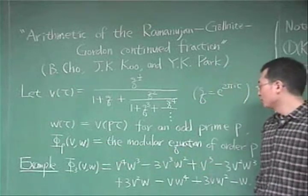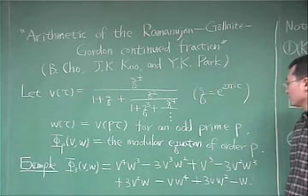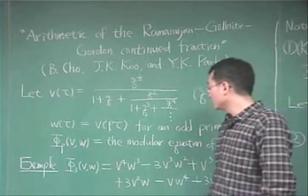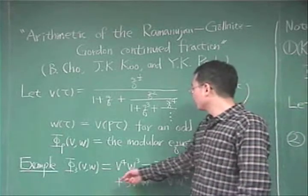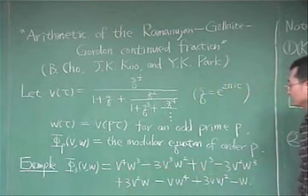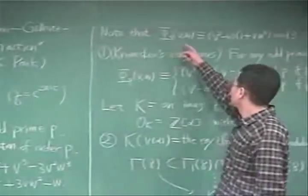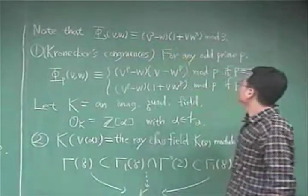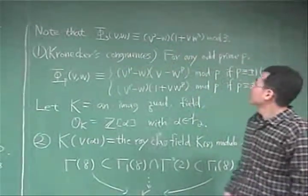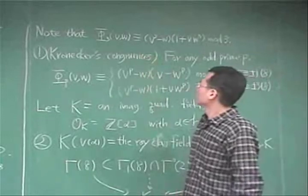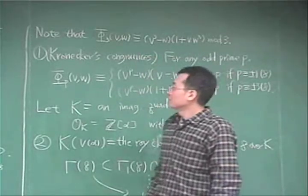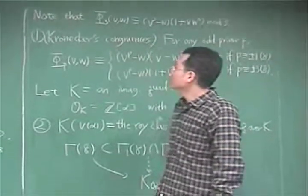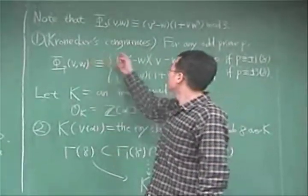Some examples of Modular Equations are given by Chan, Huang, Vaski, and Srivastakuma. For example, when p is equal to 3, the Modular Equation of order 3 is given as follows. We note that Φ_3 is congruent to V³ minus W times (1 plus VW³) modulo 3. This congruence is called a chronicus congruence.